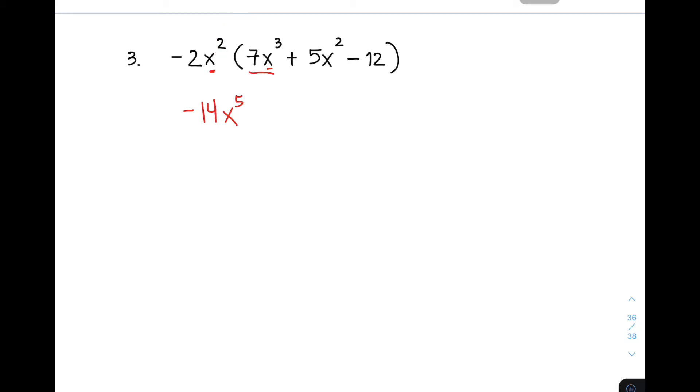So next we need to multiply negative 2X squared to the second term, which is 5X squared. And that will give you, again, a negative answer because that is negative times positive. So 2 times 5, that is 10. And then for the variable part, you have X raised to 4. Why 4? Because we have 2 plus 2. And then let's move on with the third term. You have negative 2X squared to be multiplied to negative 12. As you can see, our two terms are both negative. So that will give you the product of positive. And then 2 times 12, that is 24. And since it has no variable, simply copy X squared. So the answer is X squared.